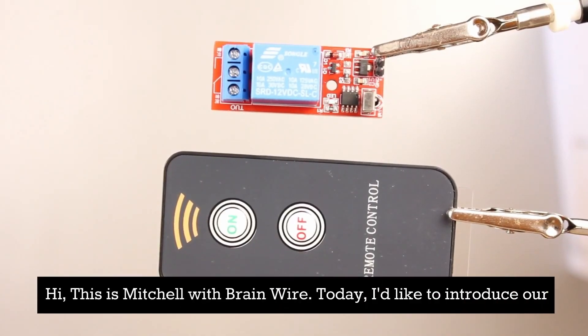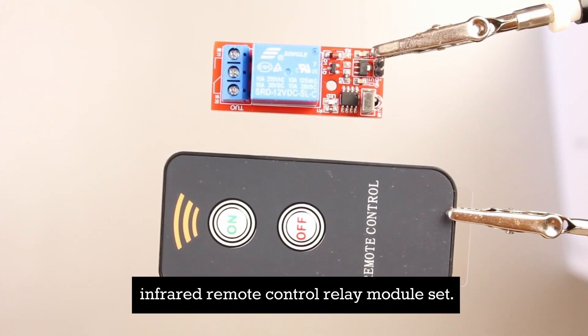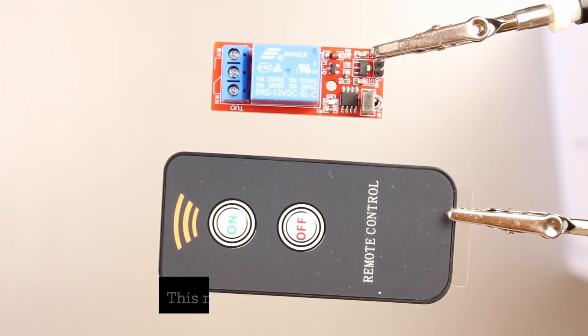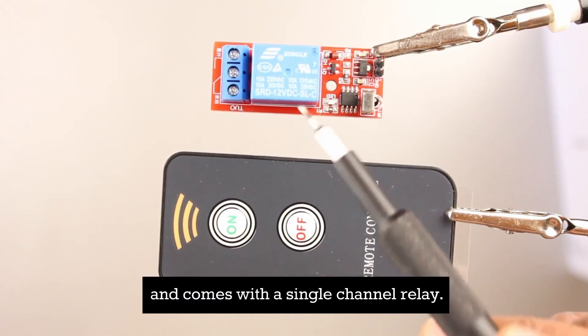Hi this is Mitchell with BrainWire. Today I'd like to introduce our infrared remote control relay module set. This module operates at 12 volt DC and comes with a single channel relay.